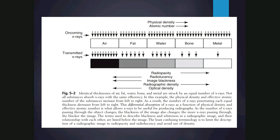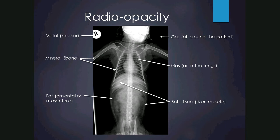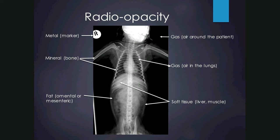Here's an example radiograph of a monkey showing the different opacities. The metal marker is very bright white. Bone is slightly less radiopaque but still quite white. Soft tissues such as the liver or muscles are intermediate. Even more radiolucent is fat — mesenteric fat for example — and the most radiolucent is gas, seen in the lung or around the patient. Gas around the patient looks darker than that in the lung because the lung still contains small soft tissue structures such as vessels and bronchi.